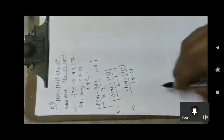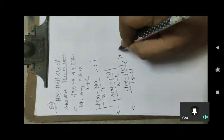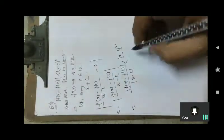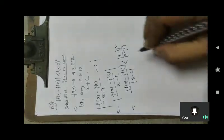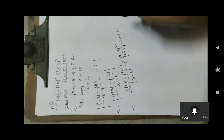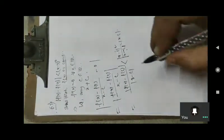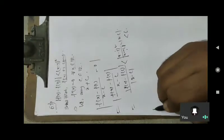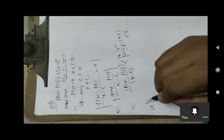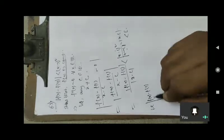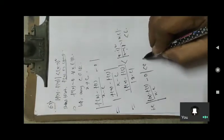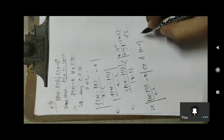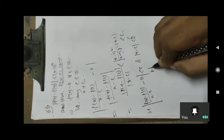So η = [f(x) - f(c)] / (x - c) minus 0. Now, if η < ε, that means: if |x - c| < δ, then η < δ, where δ is equal to ε.